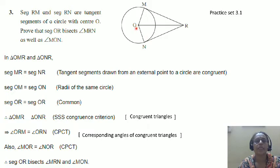You have triangle OMR and triangle ONR, where MR is equal to NR. Tangent segments from an external point are of the same length. OM is equal to ON, radii of the same circle, and OR is a common side. With the SSS test, you have two triangles which are congruent.